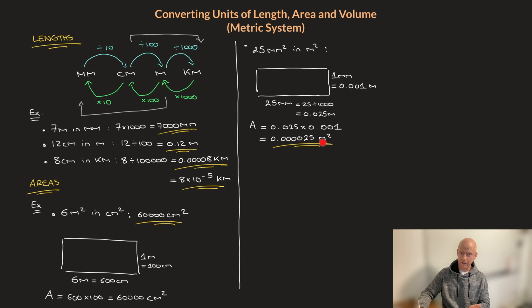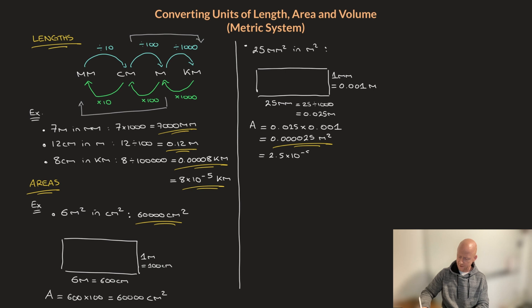If we had to write this answer in standard form — since it's less than one, we count how many zeros we see before the 2. There are five zeros, meaning a power of negative five on the 10. So we could also write this area as 2.5 times 10 to the power of negative 5 square meters. So 25 square millimeters corresponds to 0.000025 square meters.